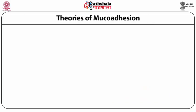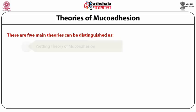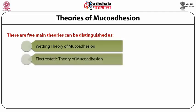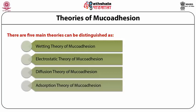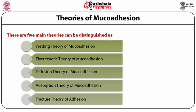To better understand the process of mucoadhesion, scientists including Jimenez-Castellanos and Andrews et al. proposed various theories over the decades. The five main theories associated with mucoadhesion are: the wetting theory, the electrostatic theory, the diffusion theory, the adsorption theory, and the fracture theory of mucoadhesion.